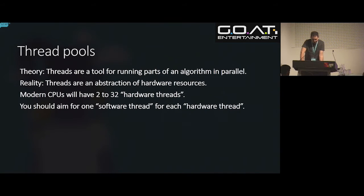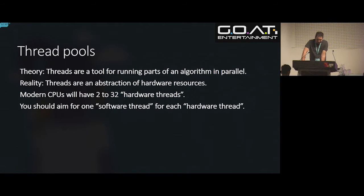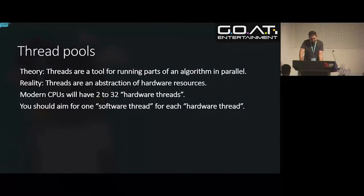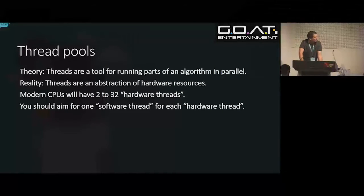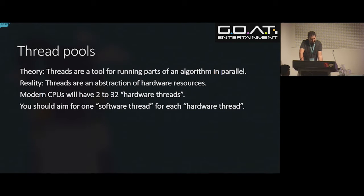These days, pretty much every single game engine is built on top of a thread pool at its core. With a thread pool, we pre-create some number of threads and keep them alive for the entire course of the application. The reality is that threads are an abstraction over hardware in the CPU — CPUs have a fixed number of hardware threads, and each software thread maps onto one of those. On PCs you can use the CPUID instruction to ask how many hardware threads are available, and then make one software thread for every hardware thread.